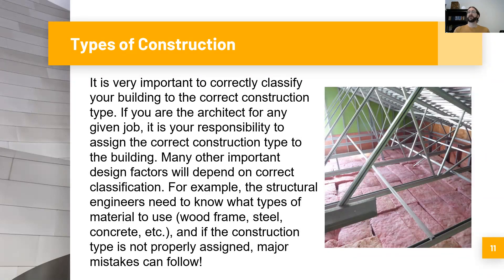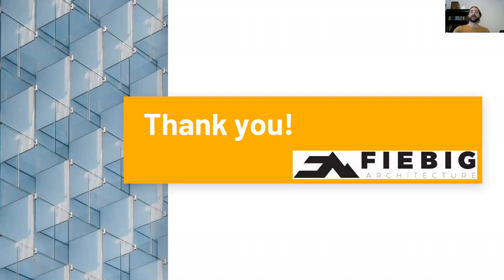When it comes to types of construction, it is very important that you correctly classify your building. If you are the architect for any given job, it is your responsibility to assign the correct construction type to the building. Many other important design factors will depend on correct classification — for example, the structural engineers need to know what types of material to use: wood frame, steel, concrete, etc. If the construction type is not properly assigned, major mistakes can follow. As the architect, this is your responsibility — you want to make sure you get this correct, and that you inform all of your consultant engineers of those requirements. With that, this concludes our lesson today on types of construction. Thank you very much for watching, and we will see you next time.